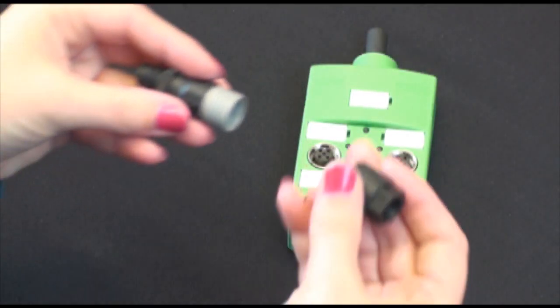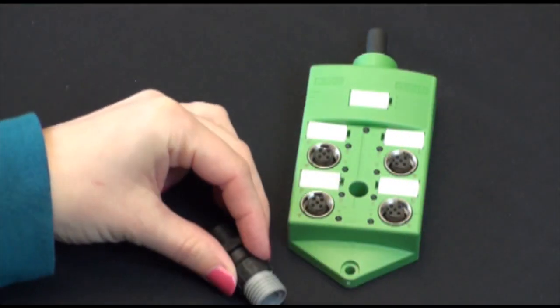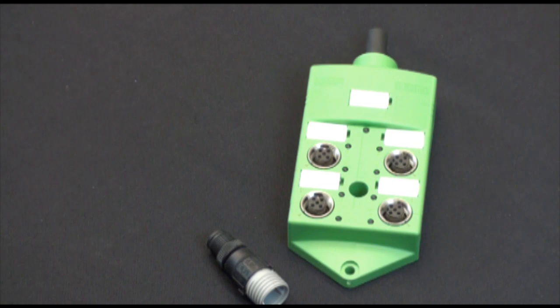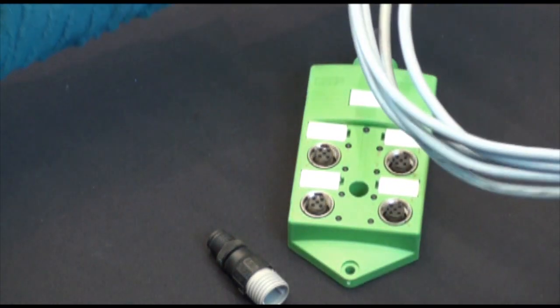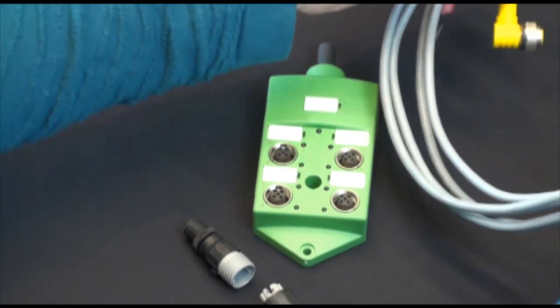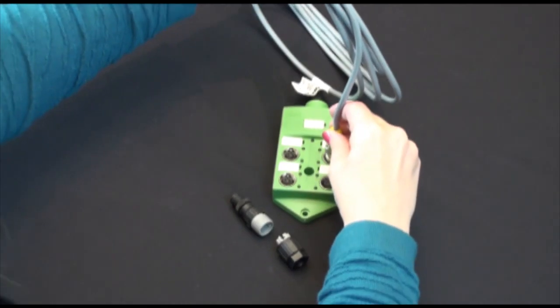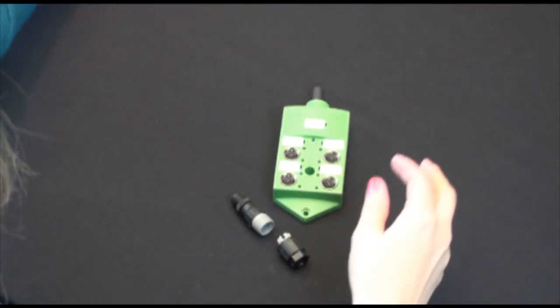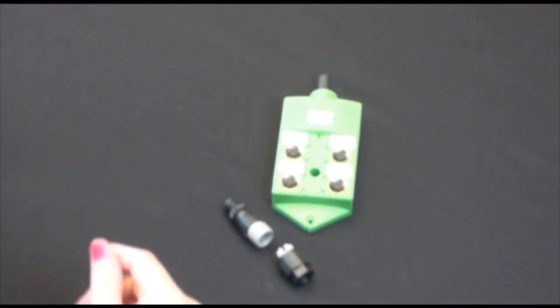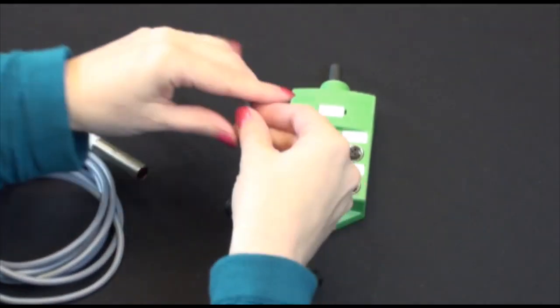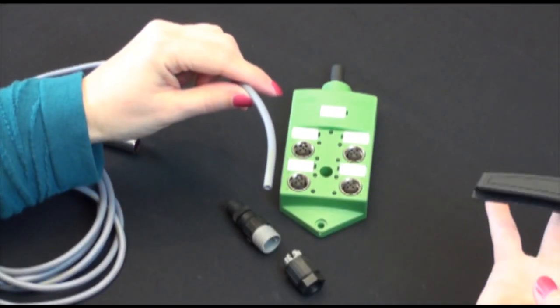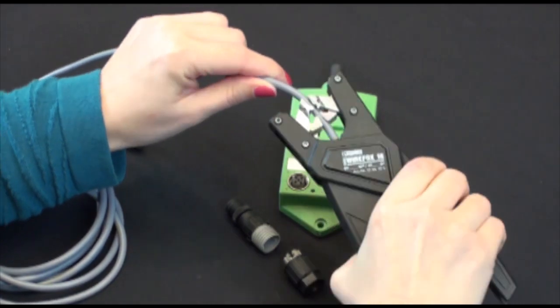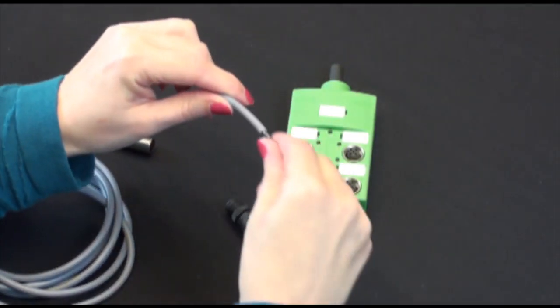The next product that we're going to look at is a field-wired connector. If you have a sensor with free leads, you can use this connector to eliminate the cord set from the sensor box. The steps are the same. Step one, you need to strip the outer jacket of the cable approximately 40 millimeters.